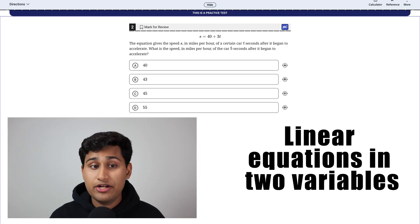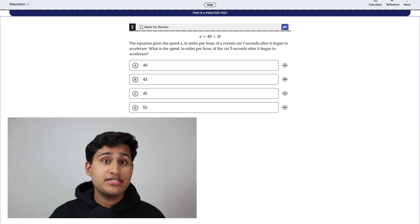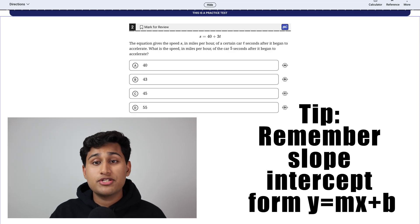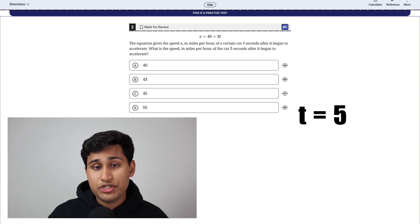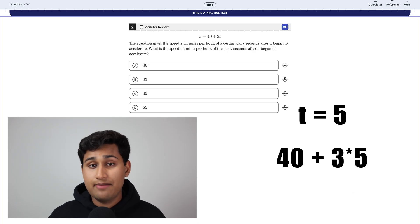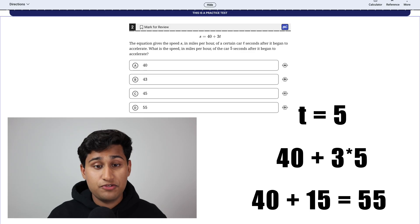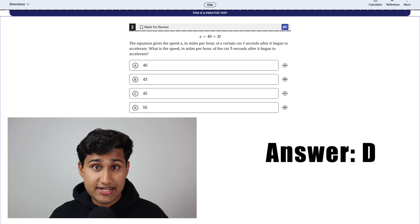So this next question is linear equations in two variables. So my tip for this one is to remember the slope intercept form which is Y equals MX plus B. So here we want to set T equal to five. Then we're just going to plug it in. So 40 plus three times five is 40 plus 15, which is 55. So our answer is D.